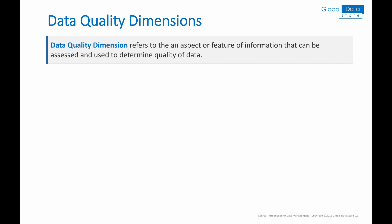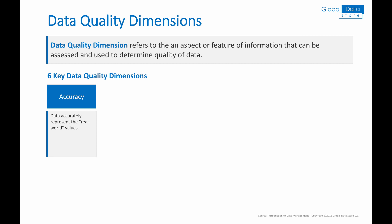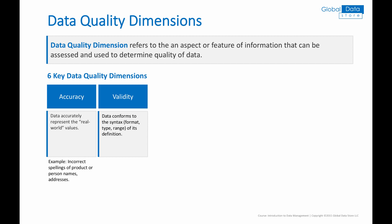Let's learn more about data quality dimensions, starting with the definition. A data quality dimension refers to the aspect or feature of information that can be assessed and used to determine quality of data. There are six key data quality dimensions. Accuracy means that data accurately represents the real world. A typical example is incorrect spellings of product or person names, or addresses.